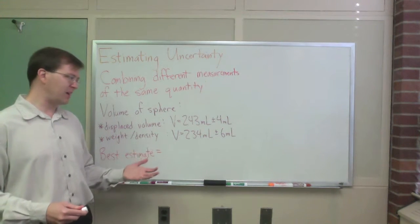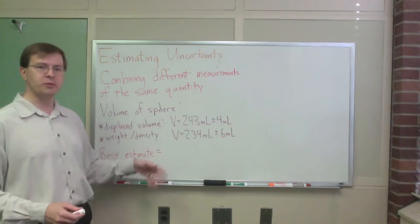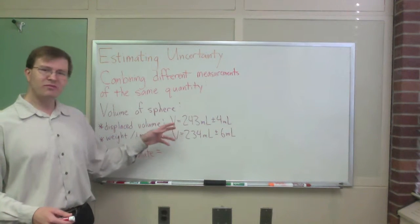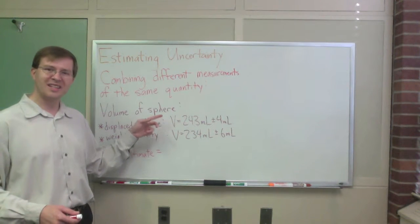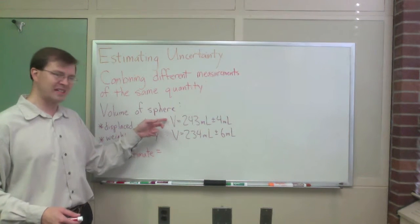random errors that are normally distributed, assuming that, it looks like I trust this one a bit more than that one. My uncertainty is smaller here. That's got to count for something, right? The smaller uncertainty should weigh more.